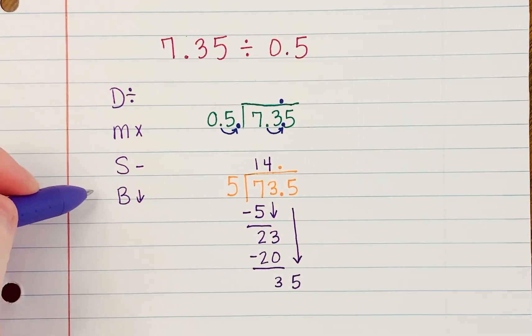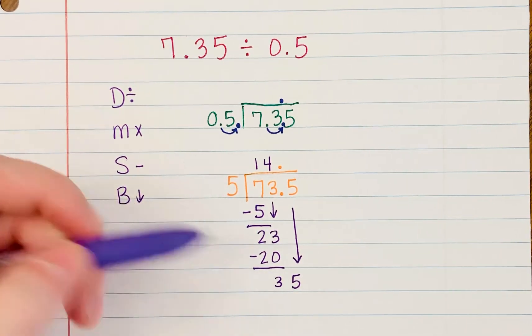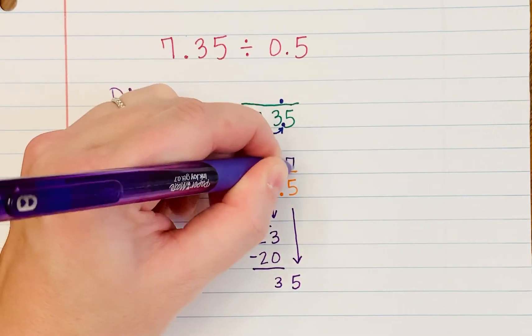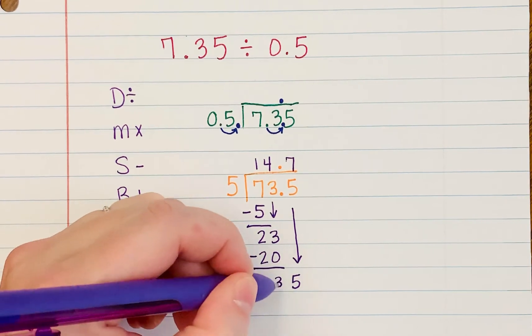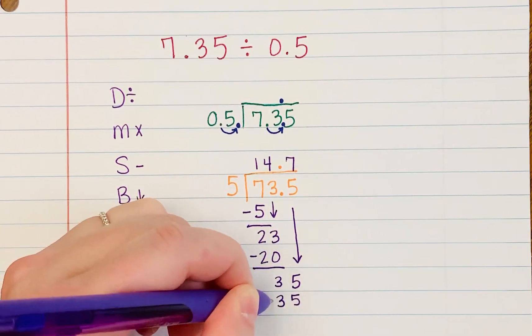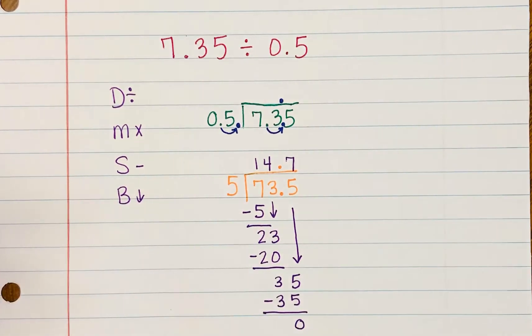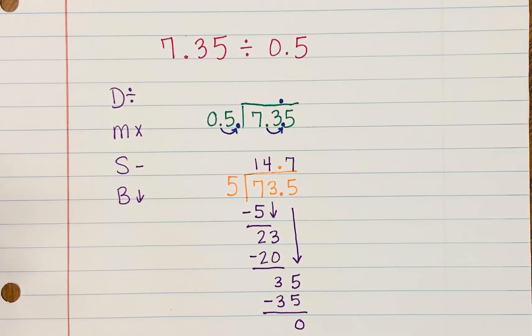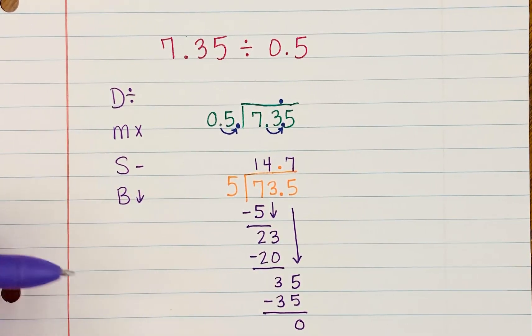Again, we start that process again. Divide. How many times does five go into 35? It goes in seven times. Multiply. Five times seven is 35. Subtract. We get zero. We know we're done when we get a remainder of zero.